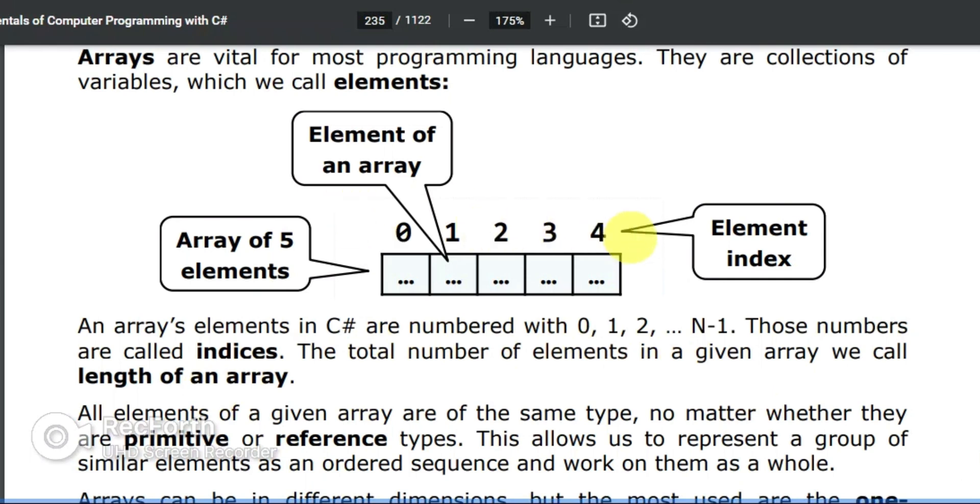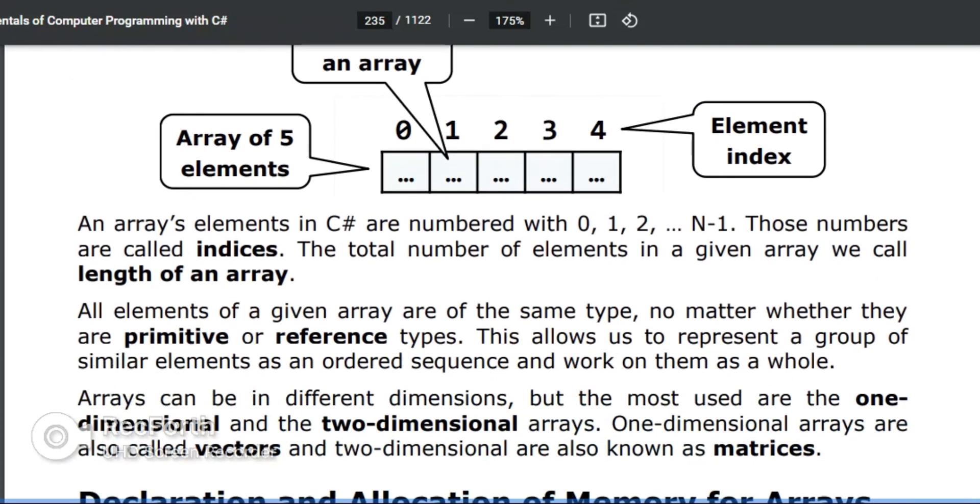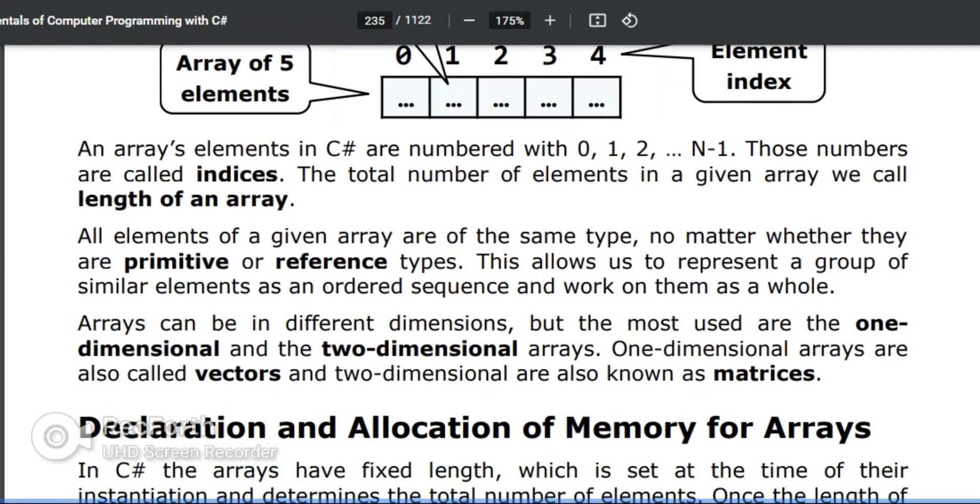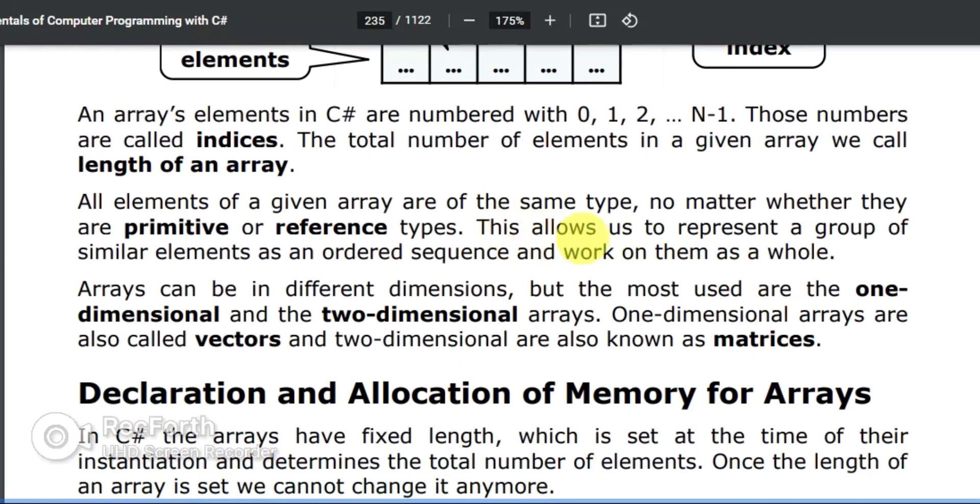In this particular example, the length of an array is actually four. All elements of a given array are of the same type, no matter whether they are primitive or reference types. This allows us to represent a group of similar elements as an ordered sequence and work on them as a whole.